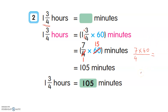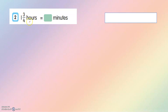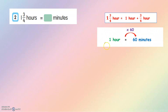But I want to show you another way to solve the question: 1 and 3 over 4 hours equals how many minutes? Here I make it into simple form — I separate 1 and 3 over 4 into 1 hour plus 3 over 4 hour. Then write the formula: 1 hour equals to 60 minutes, so we multiply by 60.